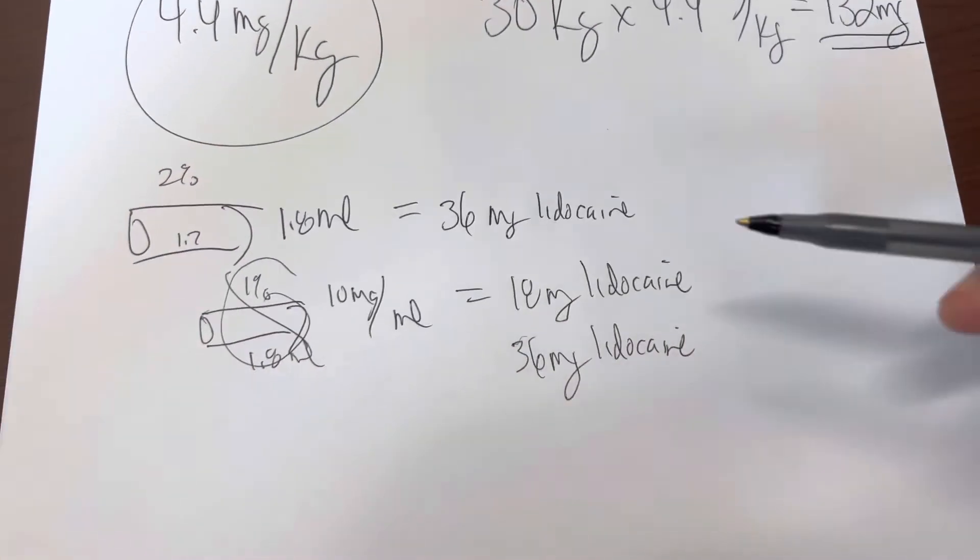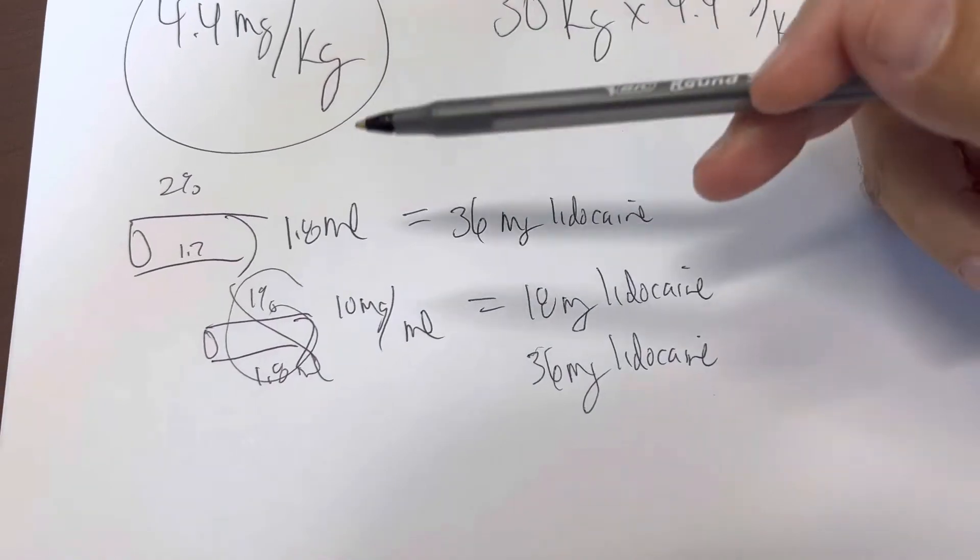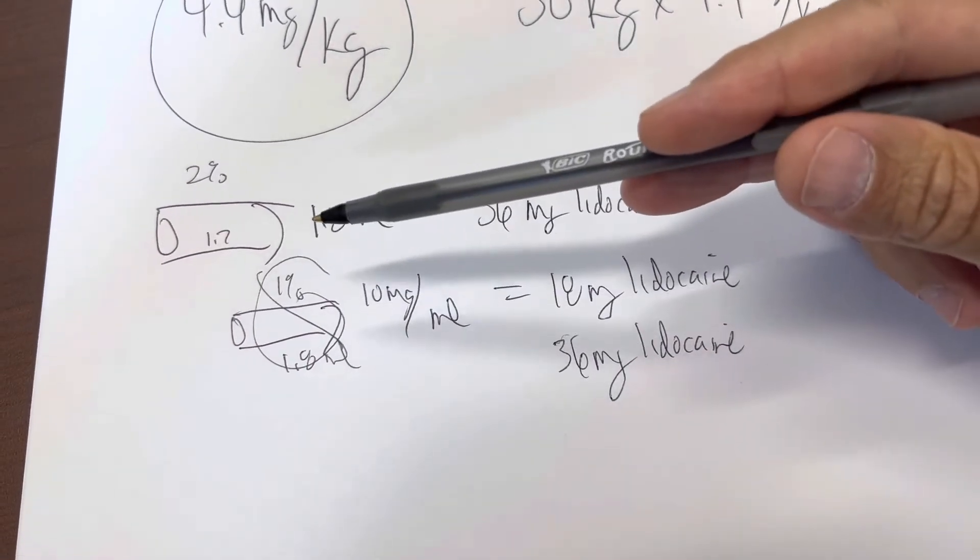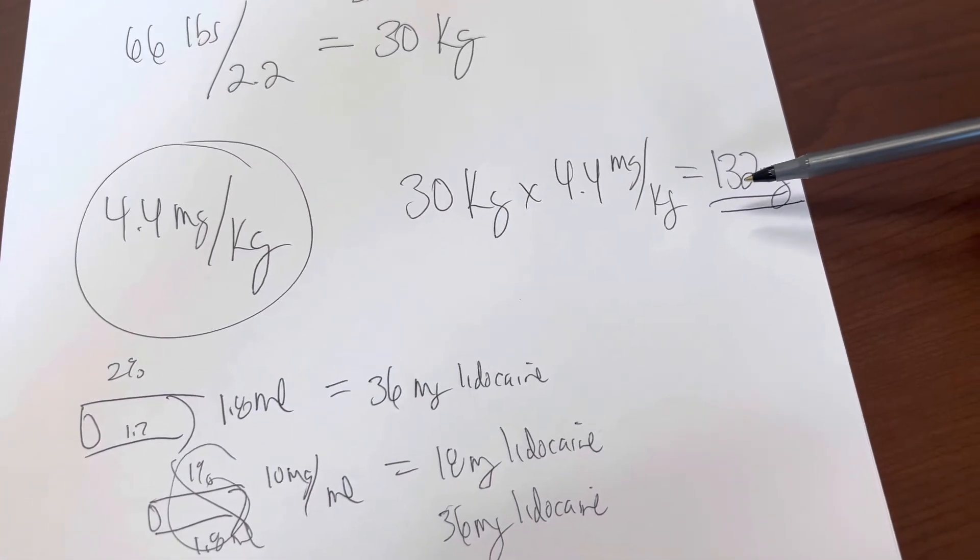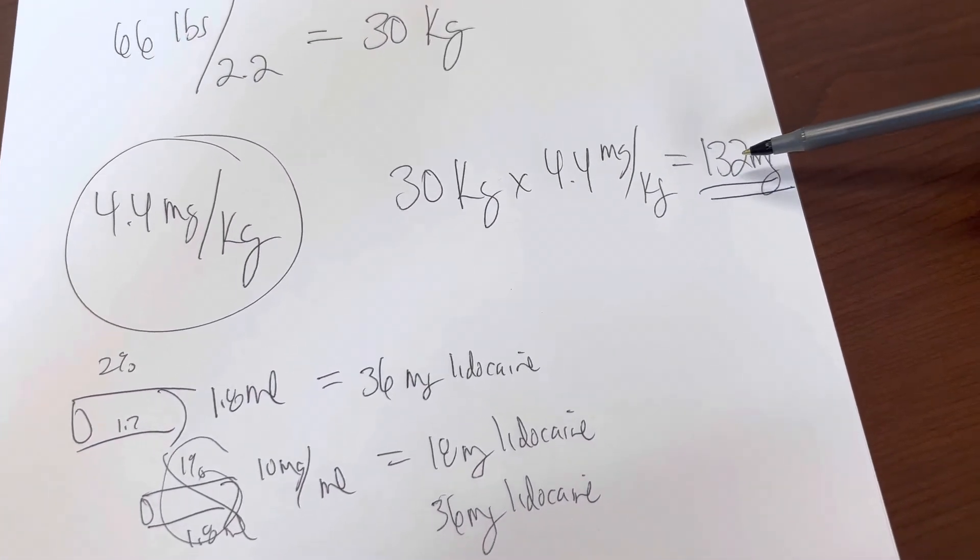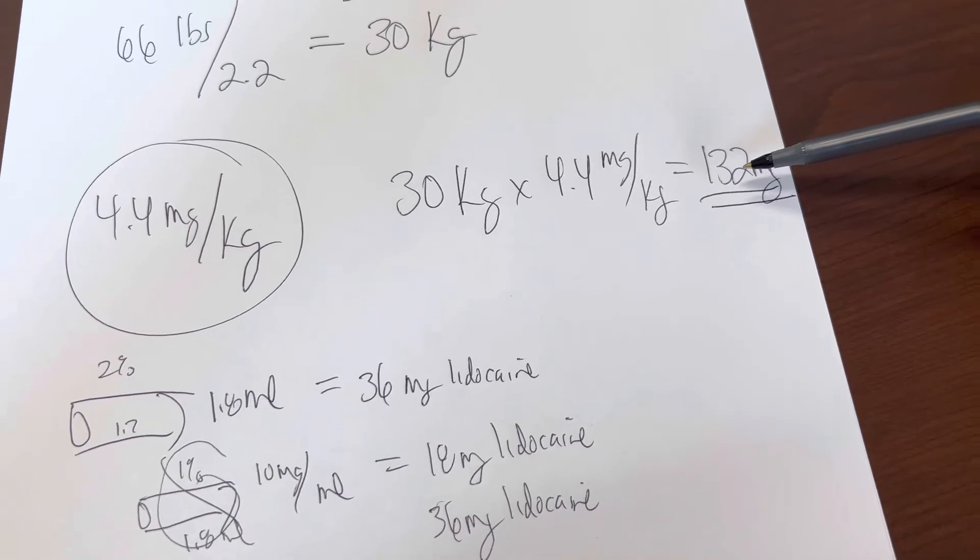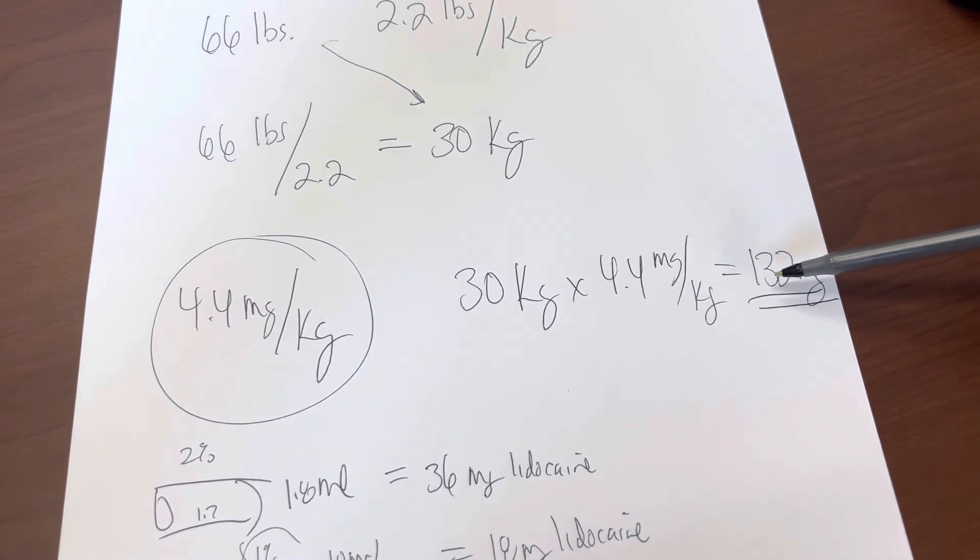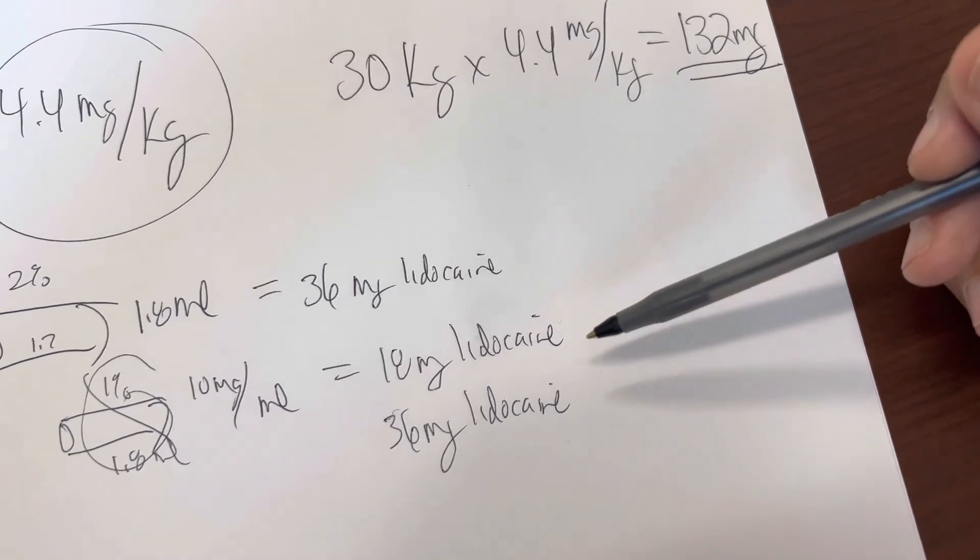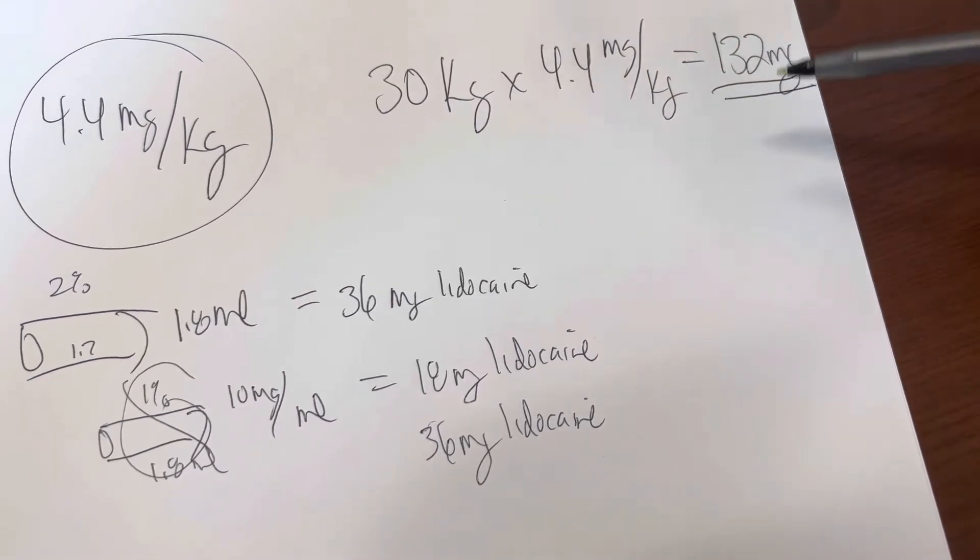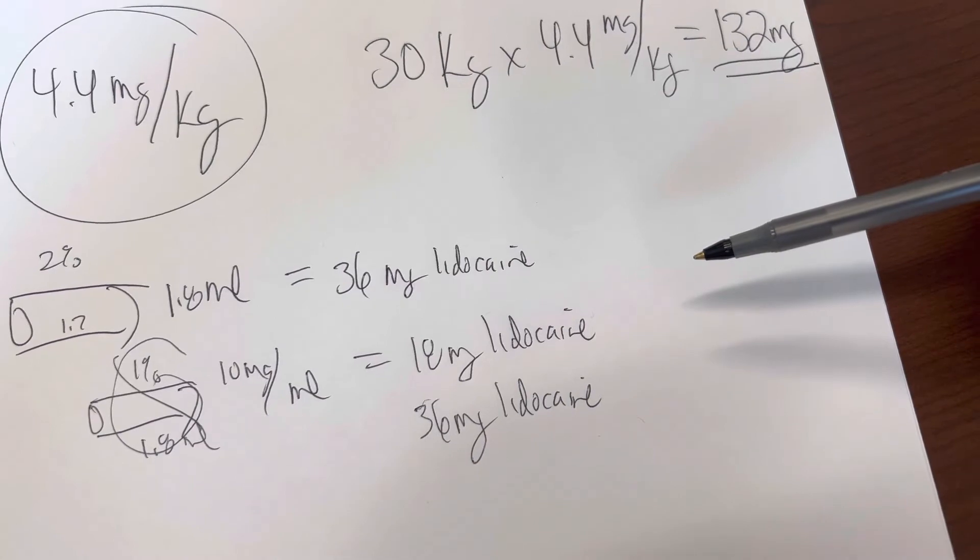So knowing that there is 36 milligrams of lidocaine in a carpule, we can divide 132 milligrams. That's the maximum amount of drug that we can give the 66-pound child. And we can divide it by 36. So 132 divided by 36.